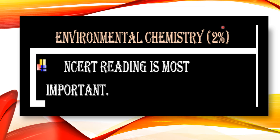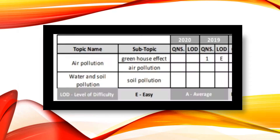Environmental Chemistry holds 2% weightage. Same approach applies: read NCERT five to six times, remember every point, and make short notes. In 2019, an easy question on the greenhouse effect under the air pollution subtopic was asked. This is the final topic covered for Class 11 first-year chemistry.